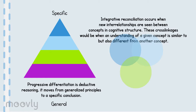There are two ideas in this theory that are important. Progressive differentiation — working from general concepts to specific concepts of any given discipline — and integrative reconciliation, the relating of new ideas to prior knowledge.